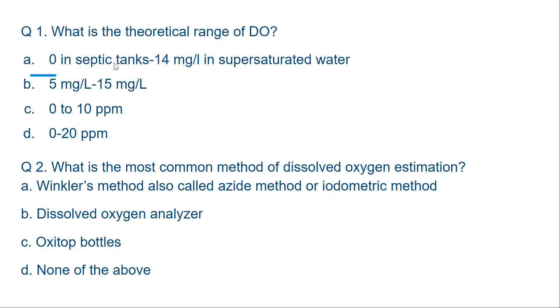The correct answer is A, 0 in septic tanks to 14 mg per liter in supersaturated water. Supersaturated water is the water having maximum DO. So all these units are the same. Supersaturated water has the maximum DO in the water. And one more, 1 mg per liter is equal to ppm.